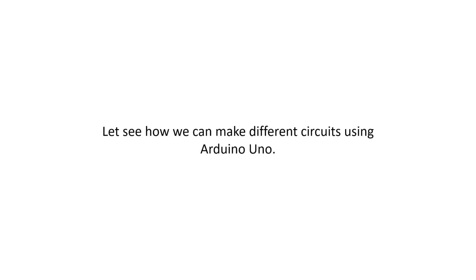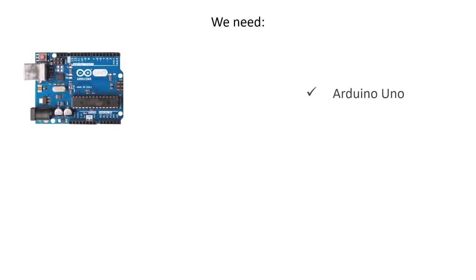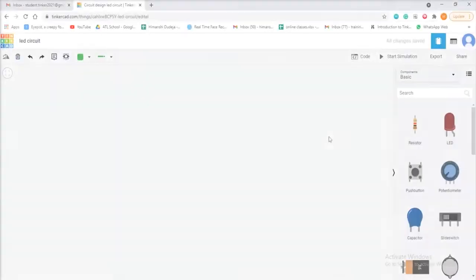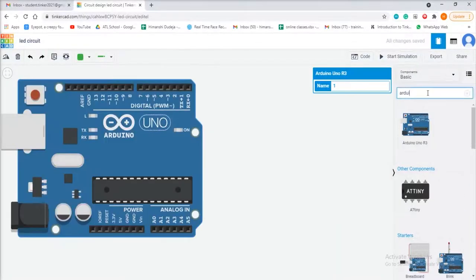Now let us see how we can make different circuits using Arduino Uno. Let's take a simple LED blink circuit example. The components needed are: Arduino Uno, LED, 1K resistor and a breadboard. Drag all the components into the circuit designing area.